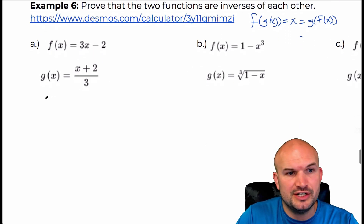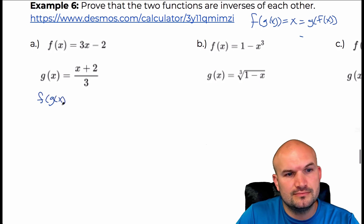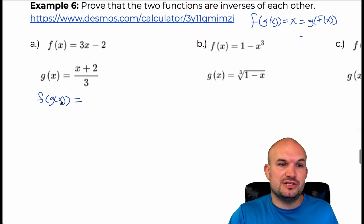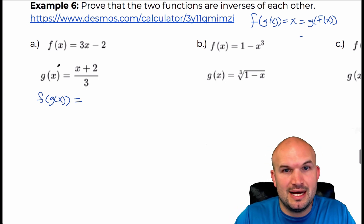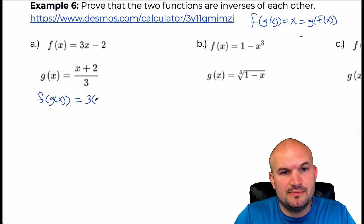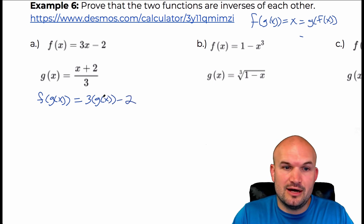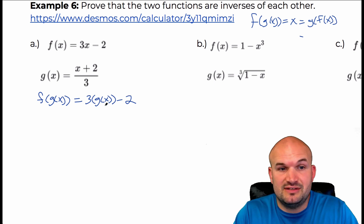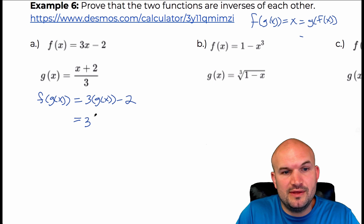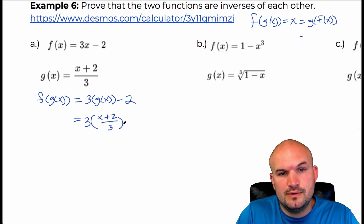So let's go ahead and check f of g of x. From composition, that basically means I'm going to take the g of x function and plug it into my f of x function. So that's going to look like three times g of x minus two. Now g of x is x plus two divided by three, so I'm going to replace g of x with x plus two over three, minus two.